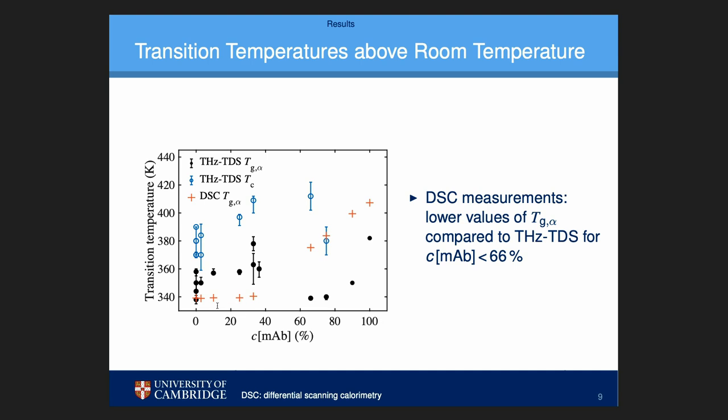In this case, however, below 40% antibody we have only a very slight increase in the transition temperature measured with DSC, compared to the quite noticeable increase measured with terahertz spectroscopy.